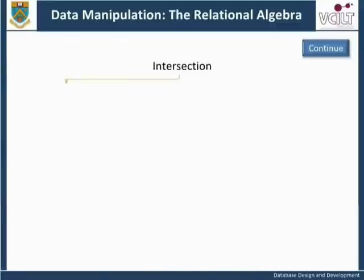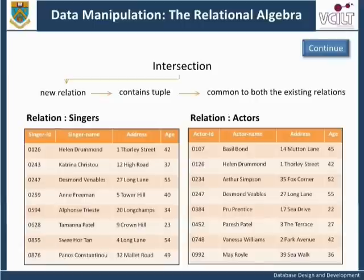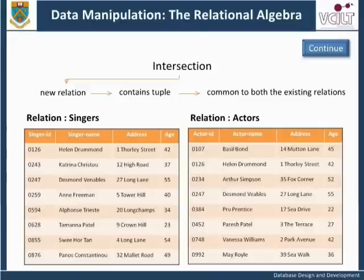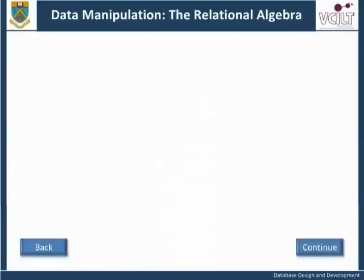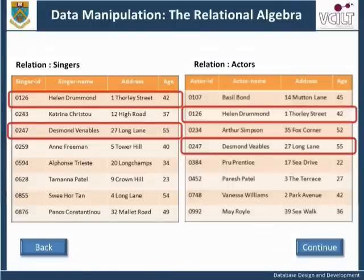Intersection creates a new relation containing tuples that are common to both the existing relations. The participating relations must be union compatible. Here are the two tables, singers and actors. It can be seen that the relations singers and actors are union compatible as they have the same number of attributes and corresponding attributes are of the same data type. We can see that there are some tuples that are common to both relations. It is these tuples that will form the new relation as a result of the intersection operation.